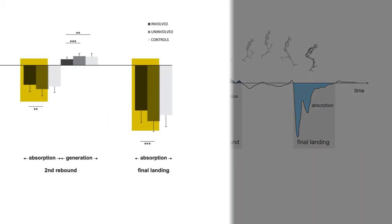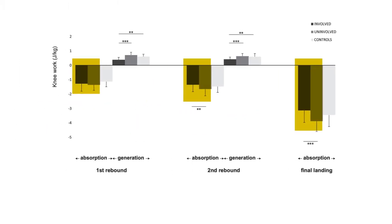While athletes reached up to 80% symmetry during some phases, symmetries as low as 54% and 66% were observed during the two rebound phases.